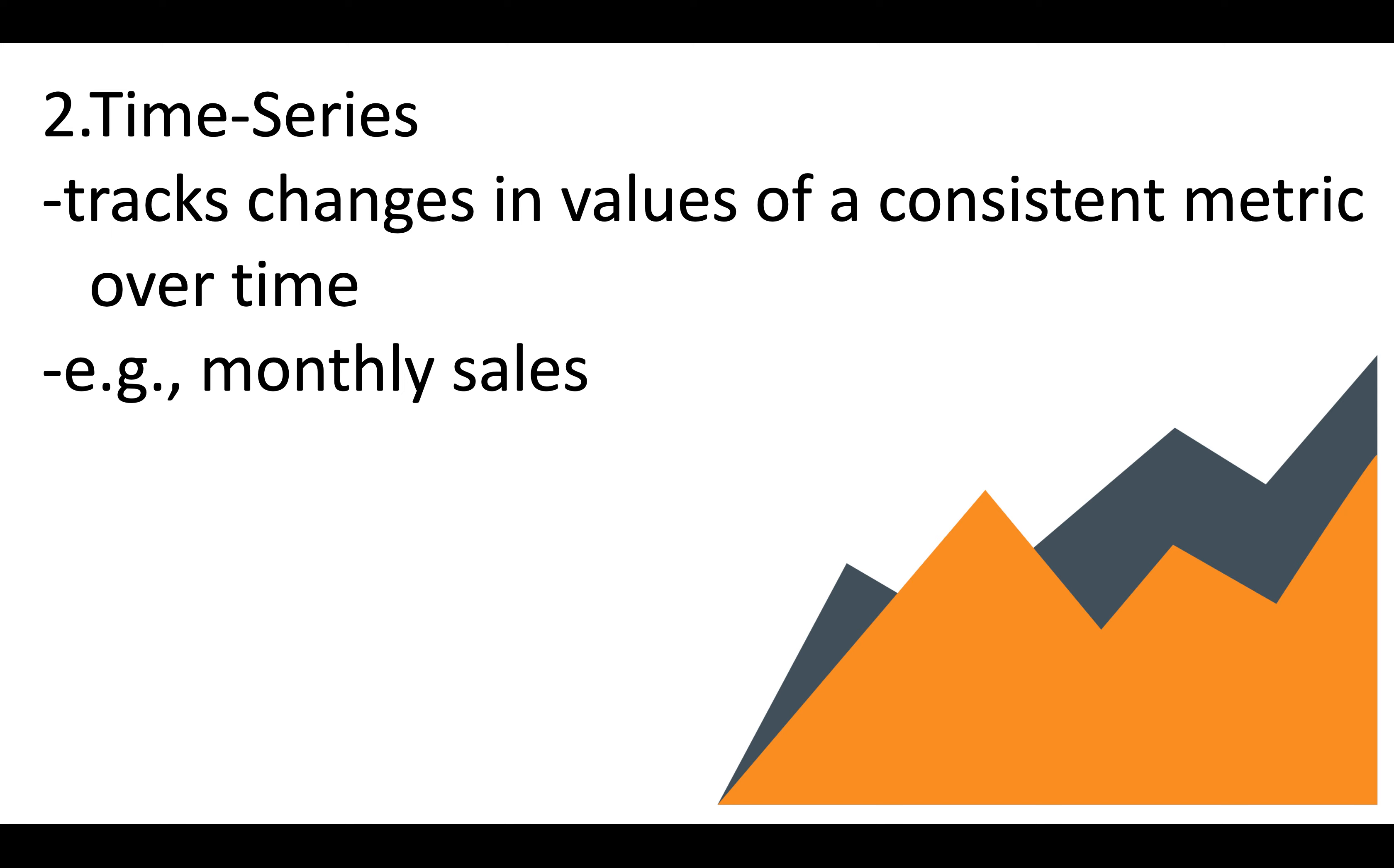Number two is time series. This helps track changes in values of a consistent metric over time. For example, if you're trying to measure monthly sales, you might want to track how they vary from month to month.